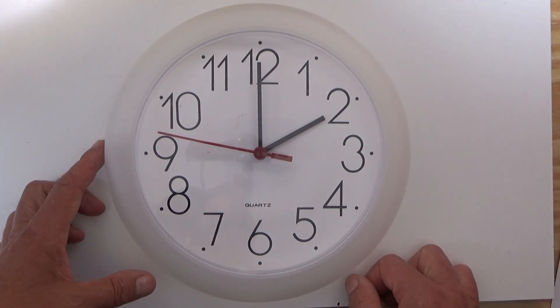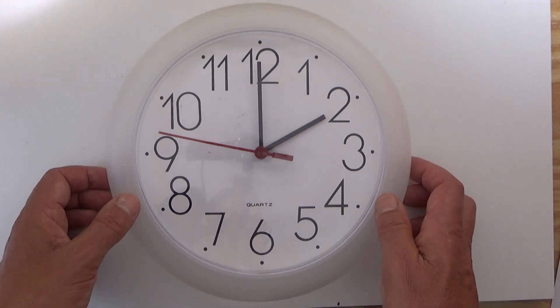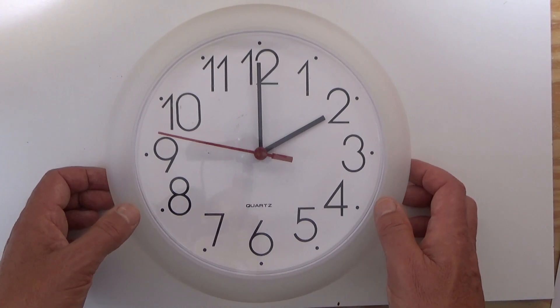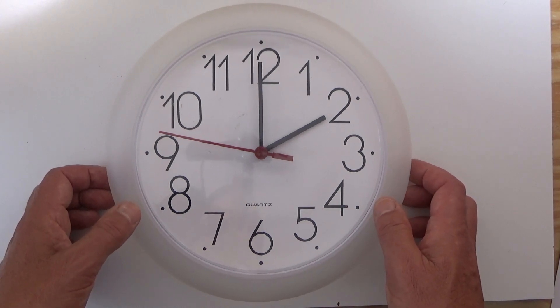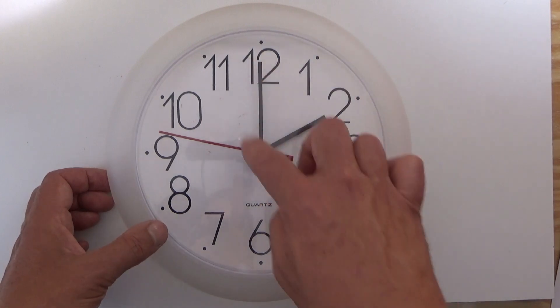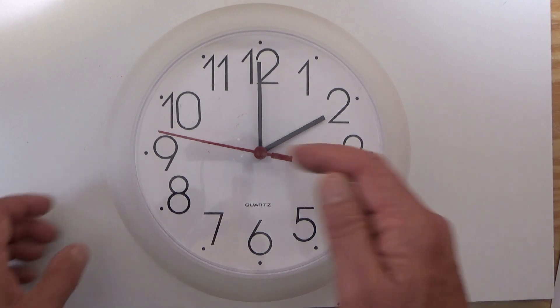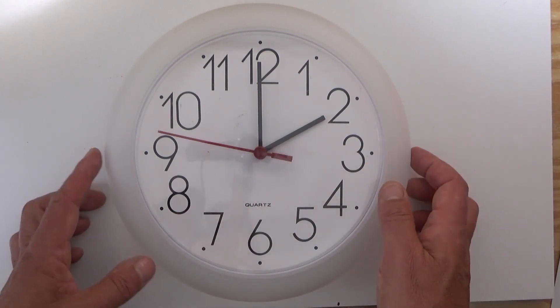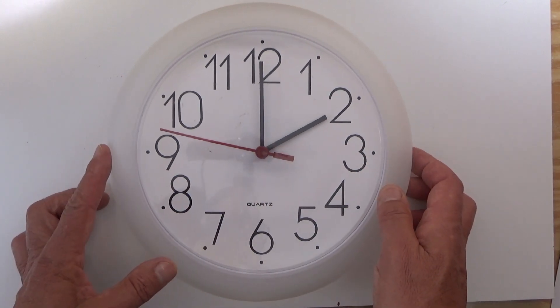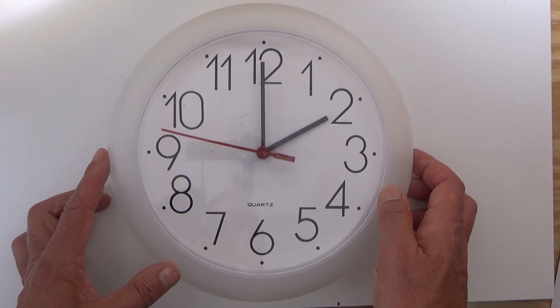Now the question is, how many times will a clock's hands be at that 60-degree angle in a 24-hour day? If you want to think about the answer then click on the pause button, otherwise I'm going to go straight into the answer.